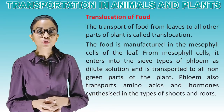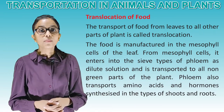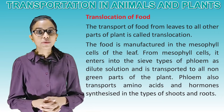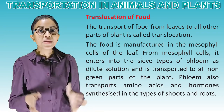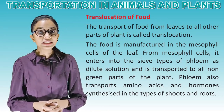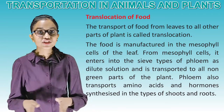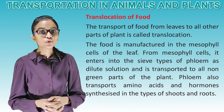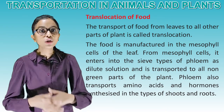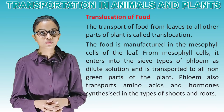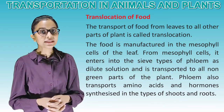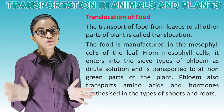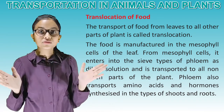The transport of food from leaves to all other parts of the plant is called translocation. The food is manufactured in the mesophyll cells of the leaves. From mesophyll cells, it enters into the sieve tubes of phloem as a dilute solution and is transported to all non-green parts of the plant. Phloem also transports amino acids and hormones synthesized in the shoots and roots.